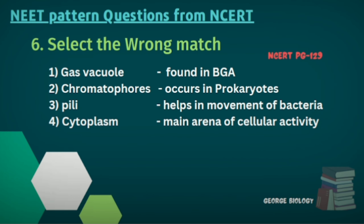Number six: Select the wrong match. Options: gas vacuole found in blue-green algae; chromatophores occur in prokaryotes; pili help in movement of bacteria; cytoplasm is the main arena of cellular activity. The suitable answer is the third option.